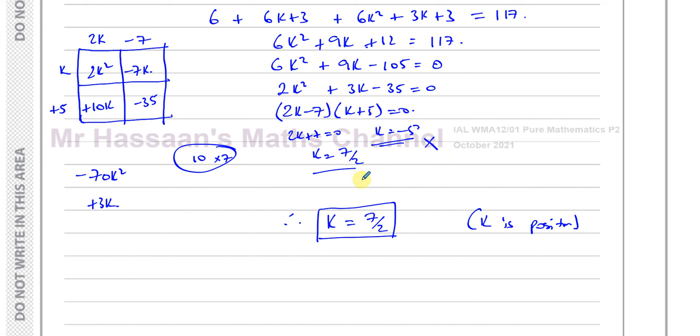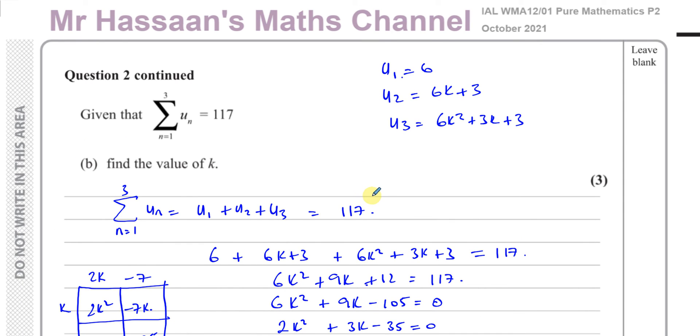We have to make sure that we choose the correct answer and make it clear that we have not taken negative 5 but taken 7 over 2. We must write down the answer as just the positive one. Otherwise, we'll definitely lose some marks. So there's the answer to part B.